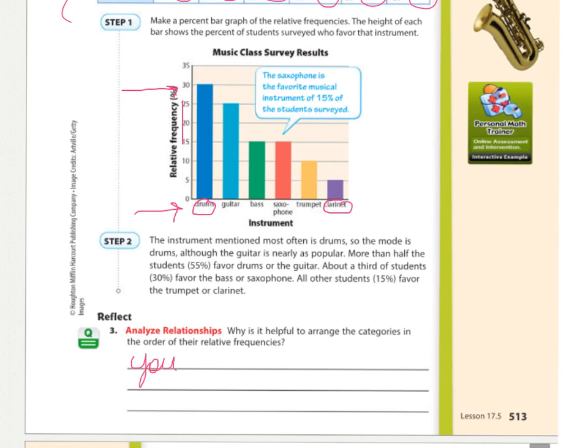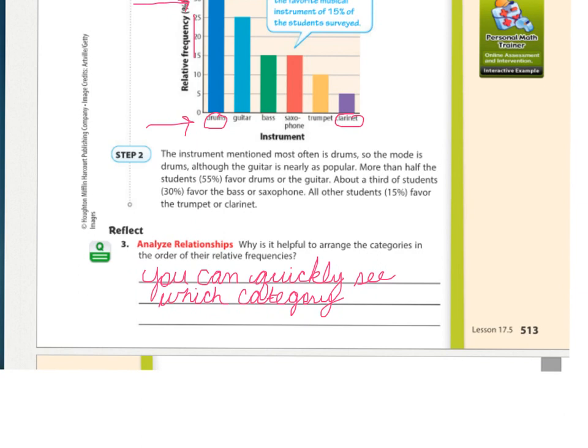So why is that helpful? You can quickly see which category was greatest, next to greatest, and so on.